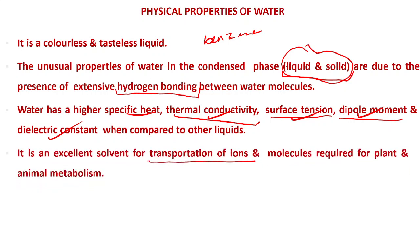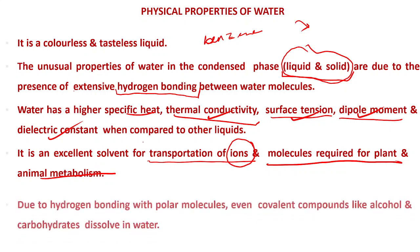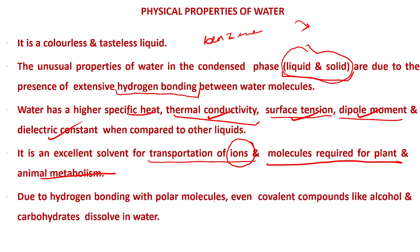Water is an excellent solvent for the transportation of ions — for example, in acid batteries. It is also used for transporting ions and molecules required for plant and animal metabolism. Due to hydrogen bonding with polar molecules, even covalent compounds like alcohol and carbohydrates dissolve in water.